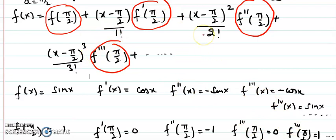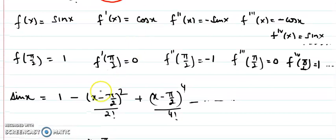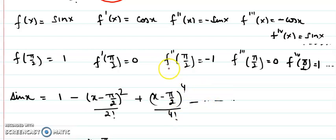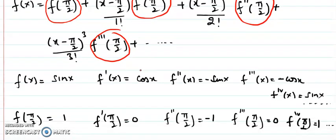Substituting into the formula: the constant term is 1, the linear term vanishes (f' is 0), the squared term gives minus (x minus pi/2) squared over 2 factorial, the cubic term vanishes, and the fourth power term gives plus (x minus pi/2) to the 4 over 4 factorial. So sin x equals 1 minus (x minus pi/2) squared over 2 factorial plus (x minus pi/2) to the 4 over 4 factorial. This is the direct method — calculating all derivatives and plugging into the formula involves many steps.